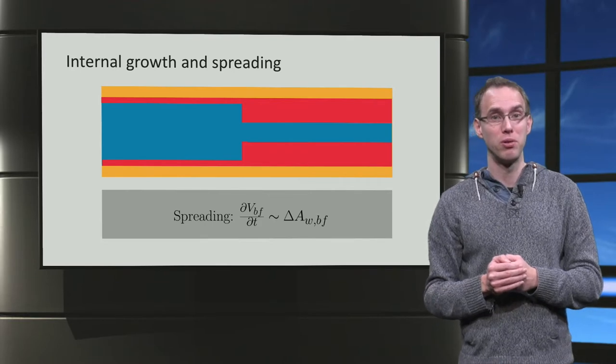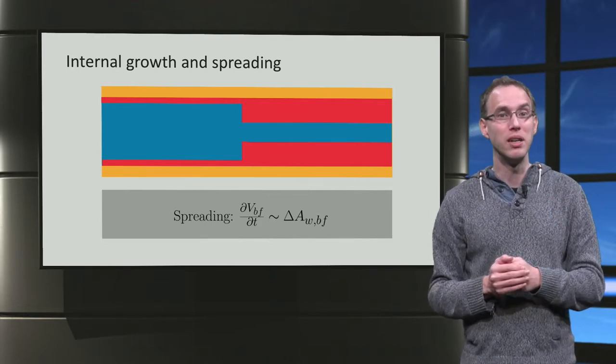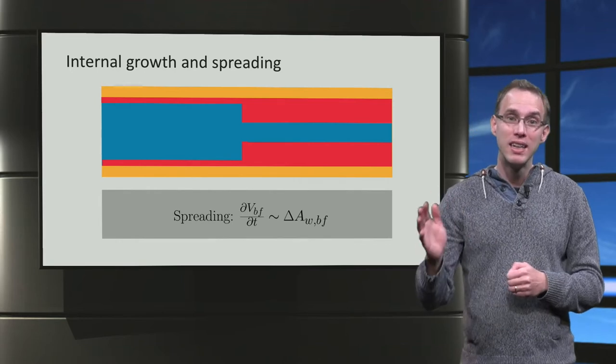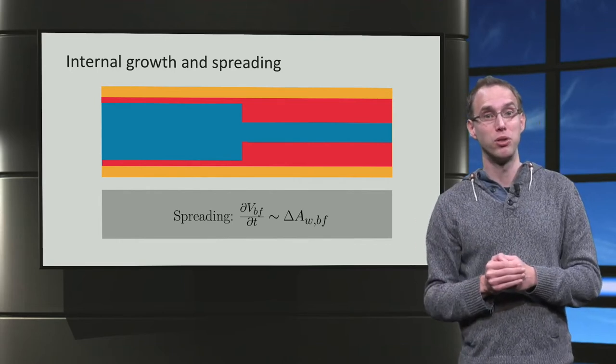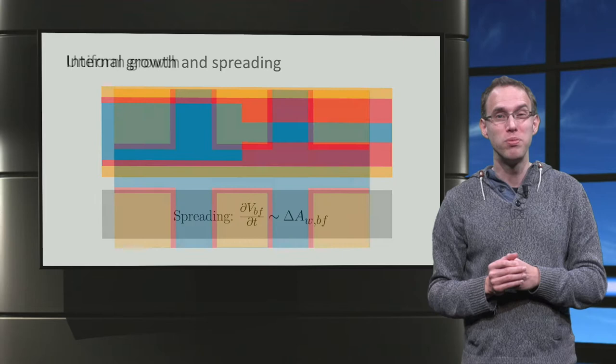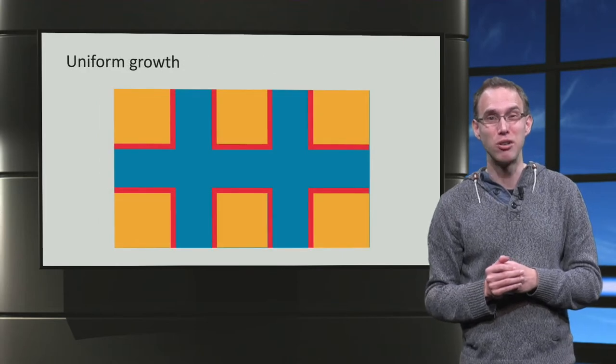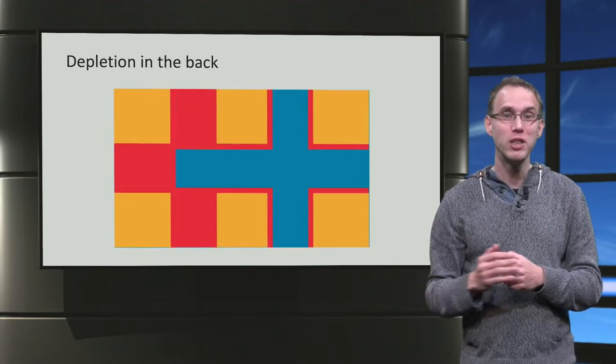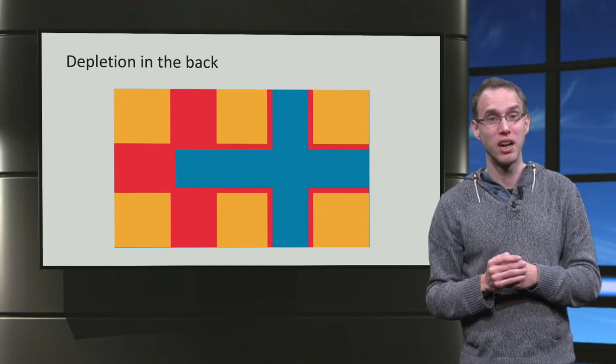A typical model run looks like this. Initially biofilm spreads through the network fast. Then it starts to grow uniformly in all tubes. But then the tubes near the inlet start to get greedy and consume all food. The depletion of food occurs in the back and the growth halts there.